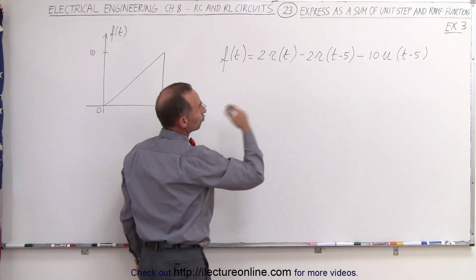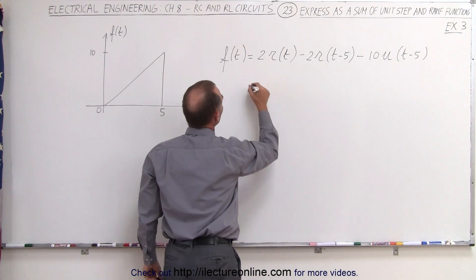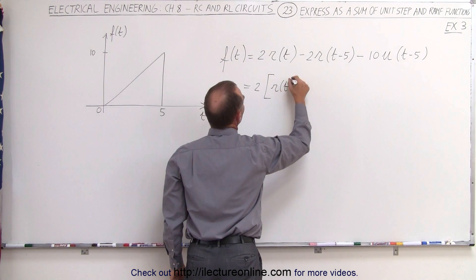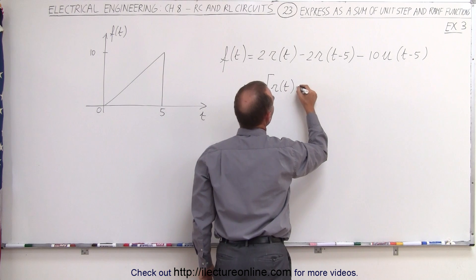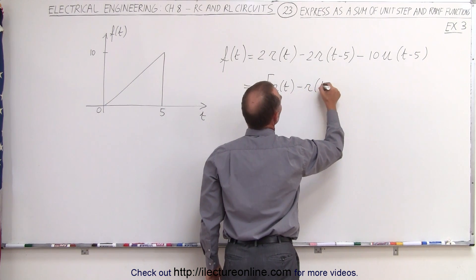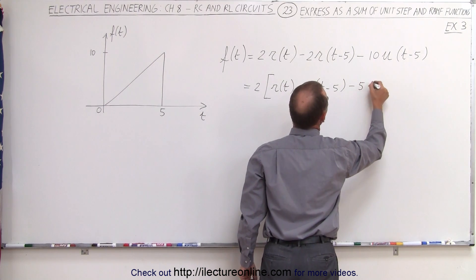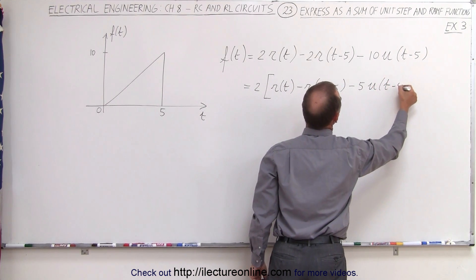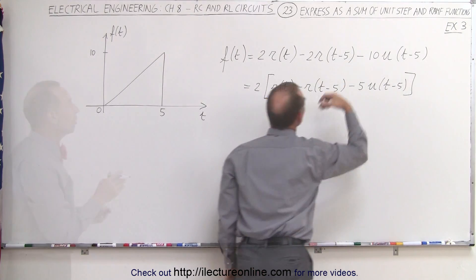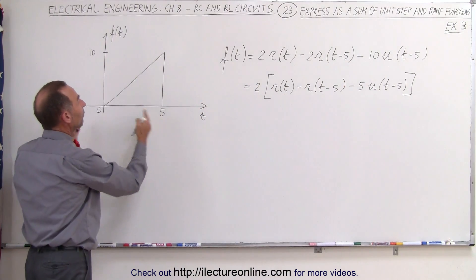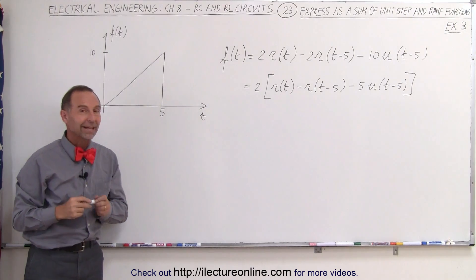And then if we want to pull out a 2 we can do that. We can say this is equal to 2 times the ramp function starting at 0 minus the ramp function starting at 5 seconds, and then minus 5 times the unit step function at t minus 5. Either way, it's a good representation of this particular input, and that's how it's done.